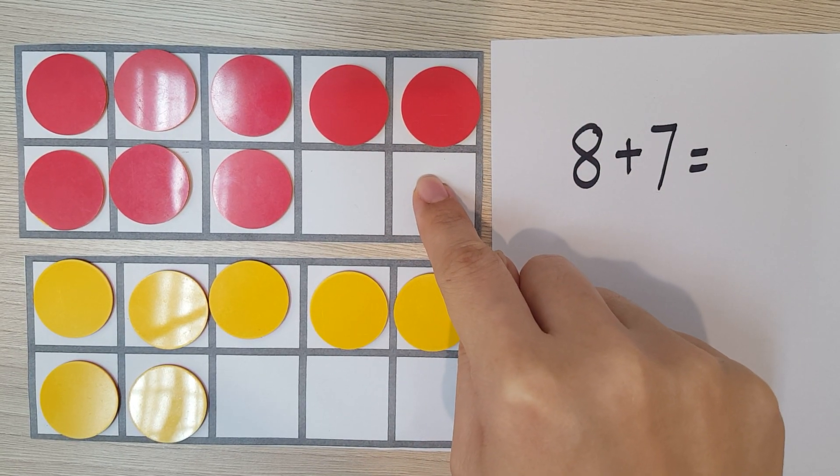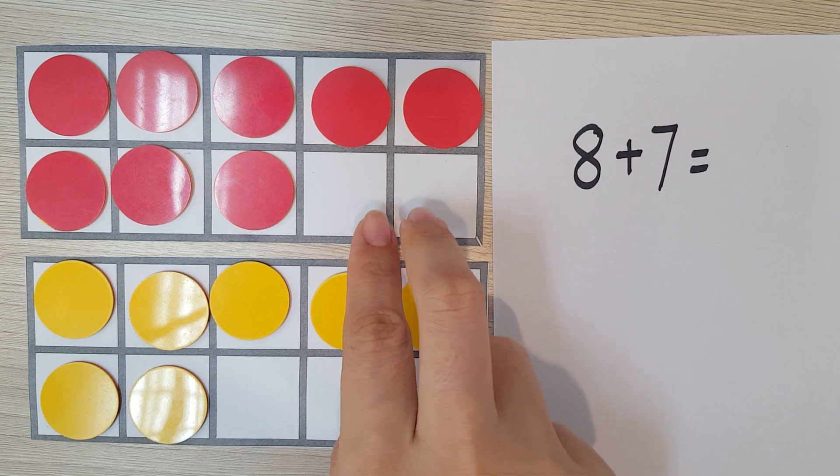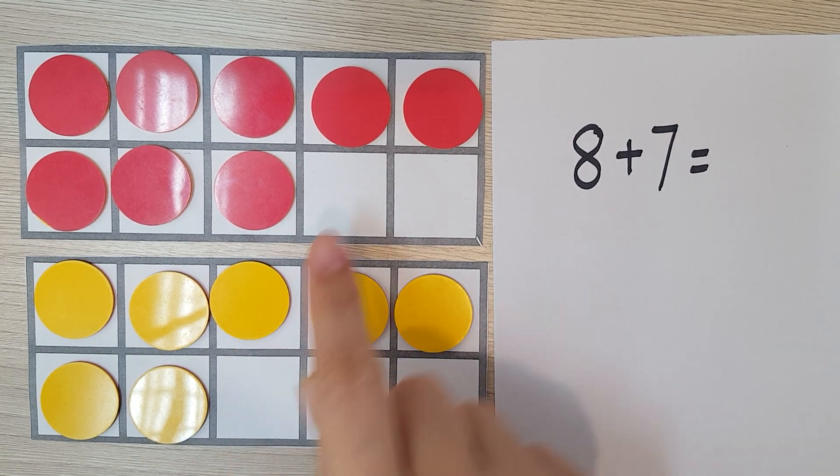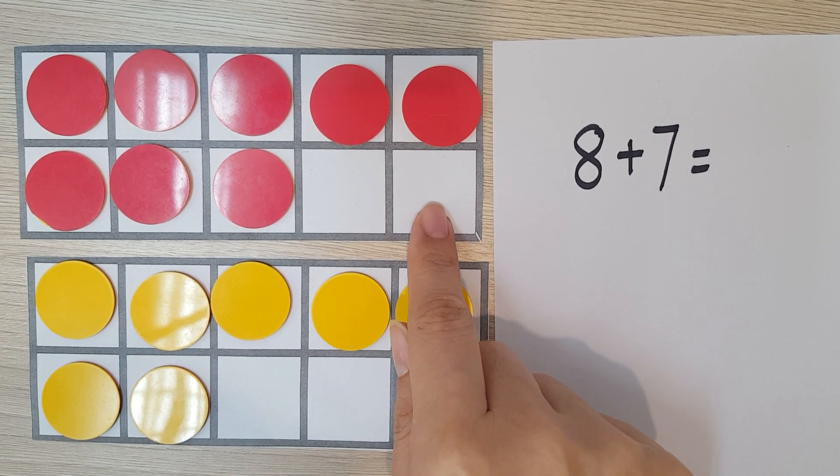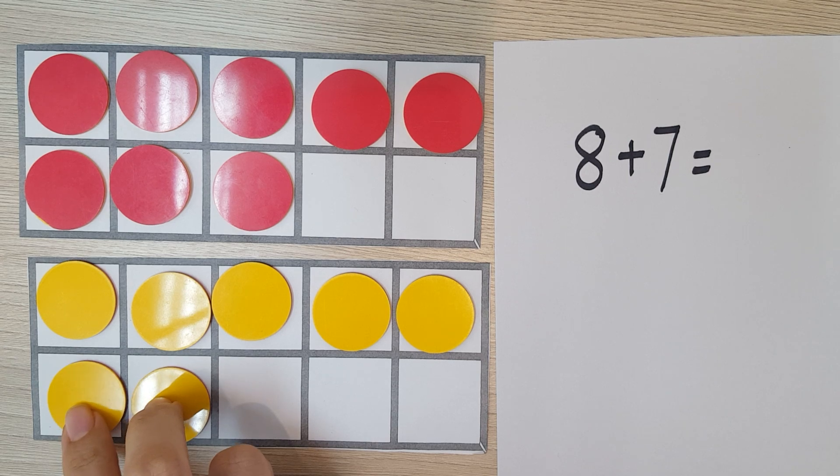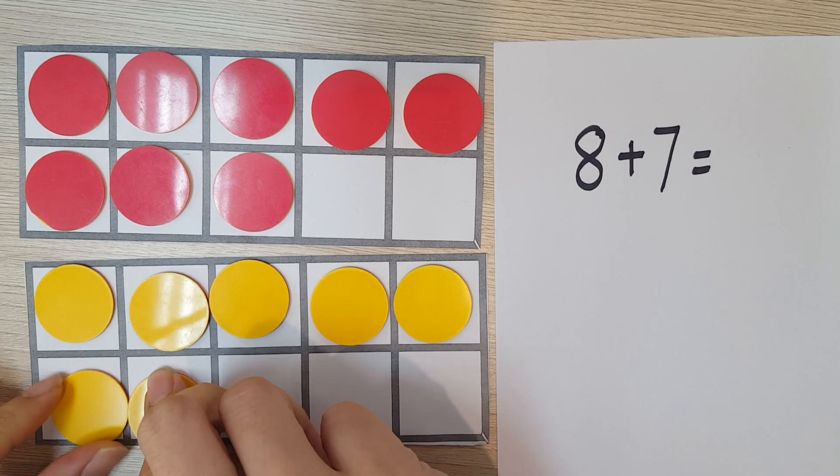So I'm going to make 8 into a 10. So how many do I need? How many more do I need to make it to a 10? I need 2 more, right? I'm going to take 2 from this 7, and I'm going to put it there.